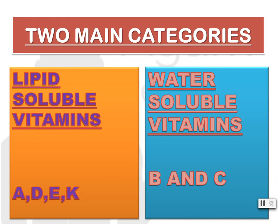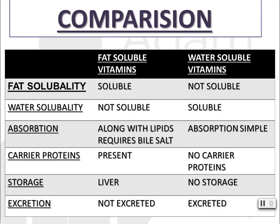Lipid-soluble vitamins are vitamins A, D, E, and K. Water-soluble vitamins are vitamin B complexes and vitamin C. If you don't remember this, there is a mnemonic for lipid-soluble vitamins: 'All Dogs Eat Kittens' — A, D, E, and K.